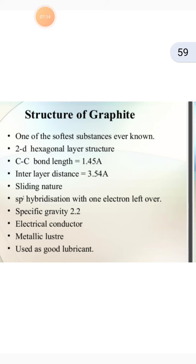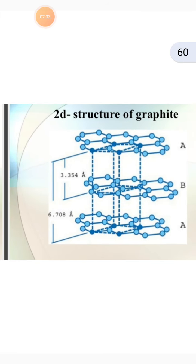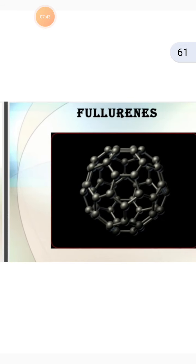So we have seen that diamond is precious and the hardest substance, but it is a non-conductor — a poor conductor of electricity. Graphite is also a carbon allotrope, but it is a good conductor of electricity. The 2D structure is shown here and will be available to you in PDF form in your WhatsApp group, so you will be able to draw the bonds clearly.